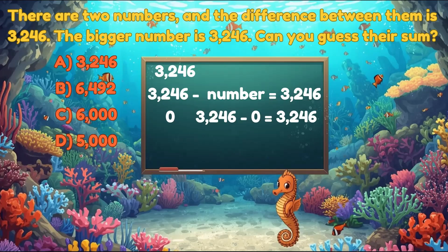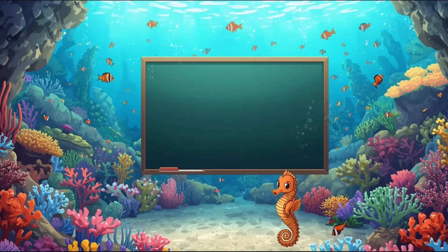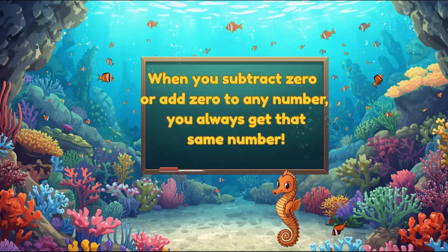Now for the sum. Adding 0 to any number gives the same number. 3,246 plus 0 equals 3,246. So the answer is A, 3,246. When you subtract 0 or add 0 to any number, you always get that same number back. You nailed it.